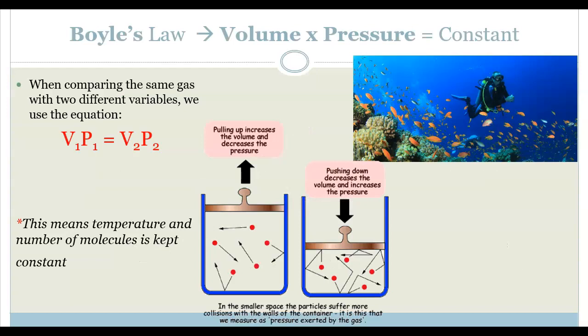With Boyle's Law, we are looking at volume times pressure equals a constant. This means volume and pressure are inversely related to one another, so as volume increases, then the pressure will decrease, given that the temperature and the number of molecules stays the same. If we're comparing the same gas in two different scenarios, we use the equation V1P1 equals V2P2. This is the equation we will use whenever we're doing problems using Boyle's Law.